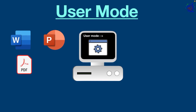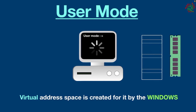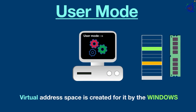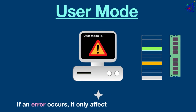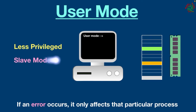When an application program runs in user mode, a virtual address space is created for it by Windows. Every process gets its own address space and cannot access the address space belonging to the kernel. So the failure of one process will not affect the operating system — if an error occurs, it only affects that particular process. User mode is a restricted mode, so there is limited access to hardware resources, which is why this mode is also known as slave mode.